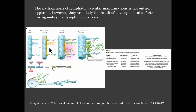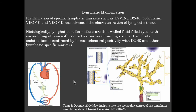Every year there's more research pointing us toward how these are developing, which will ideally help determine the best way to prevent progression and treat them, because the morbidity can be very devastating. This slide demonstrates the progression over time in embryogenesis with different cell types, precursor cells, and markers. The identification of specific markers such as LYVE-1, D2-40, podoplanin, VEGF-C, and VEGF-D has advanced characterization of lymphatic tissue. Lymphatic malformations are thin-walled fluid-filled cysts with surrounding stroma and connective tissue, confirmed with immunochemical positivity for D2-40 and other lymphatic-specific markers.